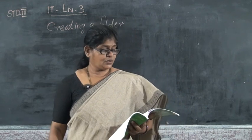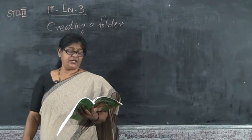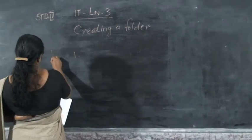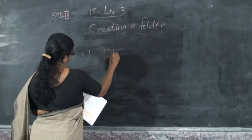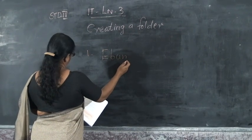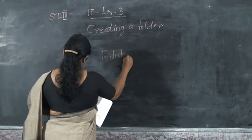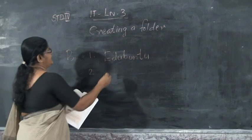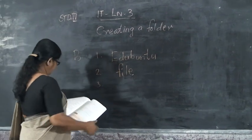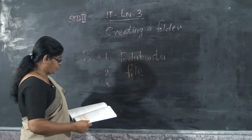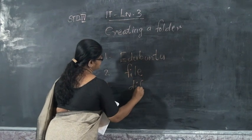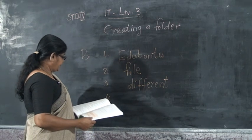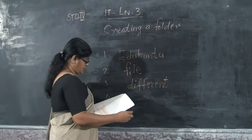Next, fill in the blanks. Question 1: Dash was earlier known as Ubuntu Education Edition — answer: Ubuntu. Question 2: A dash is an object that stores data — answer: file. Question 3: The icons of files made by different software look different. Question 4: The proper arrangement of files is known as file management.